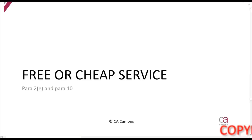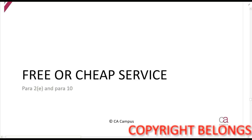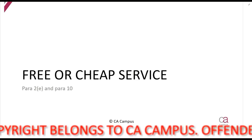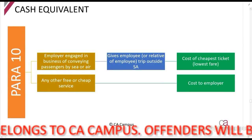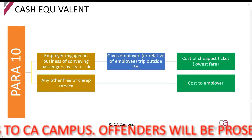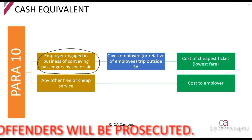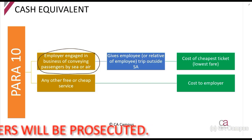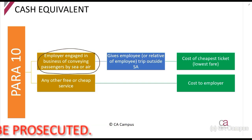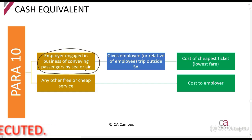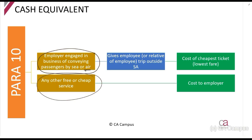Our next section is the free or cheap service fringe benefit. This covers situations where the employer either renders a service to you for free or cheap, or pays for someone to render a service. There are two broad categories: first, where the employer is engaged in the business of conveying passengers by bus, sea, or air — such as a shipping company or an airline. The second category is anything else.